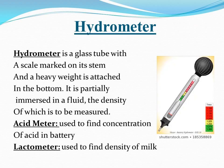Now let's discuss the hydrometer. A hydrometer is an instrument used to find the density of any fluid. It consists of a glass tube with a scale marked on its stem and a heavy weight attached at the bottom. It is partially immersed in the fluid whose density is to be measured. We have two types: the acid meter, used to find the concentration of acid in a battery, and the lactometer, used to find the density of milk.